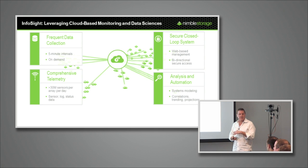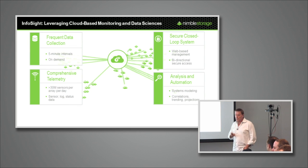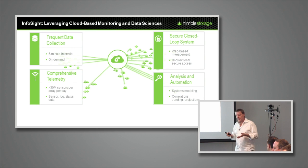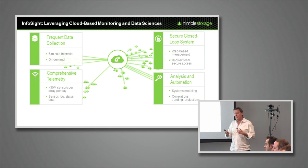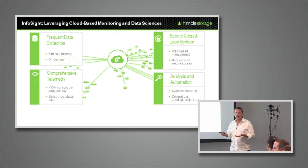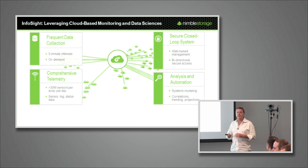All of the Nimble storage arrays we sell, we collect data in various methods. For frequent data collection, we get heartbeats sent back to us every five minutes from all of the arrays. That data set contains basic health of all the software running, all hardware health, temperature sensor readings, high availability statistics, replication information and throughput, any errors on replication, and even whether their email alerts are working. So the heartbeat itself tells us a lot about our remote monitoring capabilities.